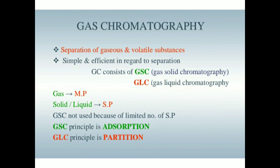Gas chromatography is used for separation of gases and volatile substances. It is simple and efficient with regard to separation. GC consists of GSC and GLC — GSC means gas solid chromatography and GLC means gas liquid chromatography. GSC is not widely used because of the limited number of stationary phases. The principle of GSC is adsorption, and the principle of GLC is partition.